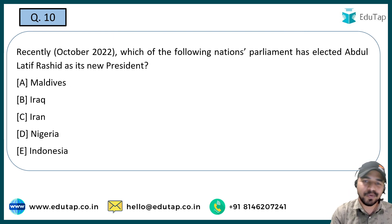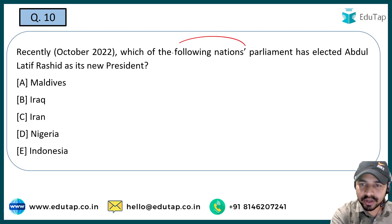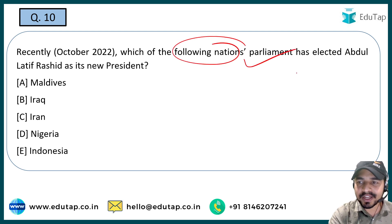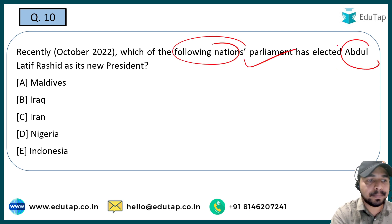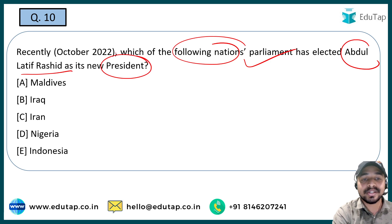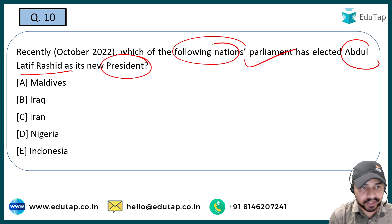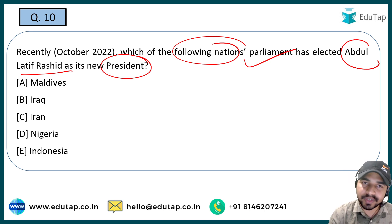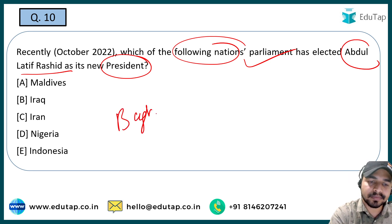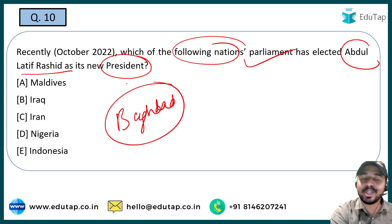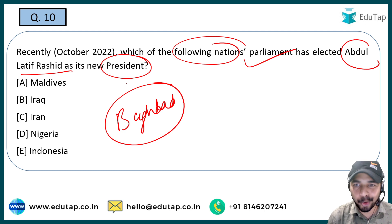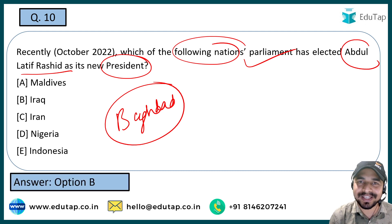The next question: which nation's parliament has elected Abdul Latif Rashid as its new president? An important point — the capital of that country is Baghdad. So the right answer is Option B — Iraq.